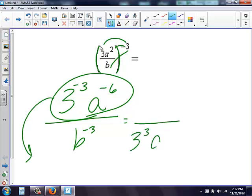So I get three to the third, a to the sixth. This has a negative exponent, so I'm going to move it to the top. So it becomes positive. I get b to the third.